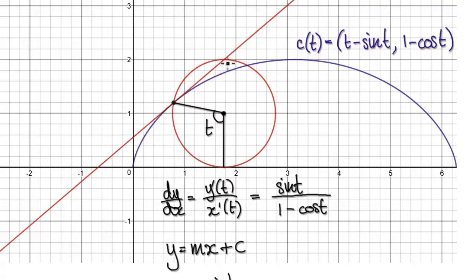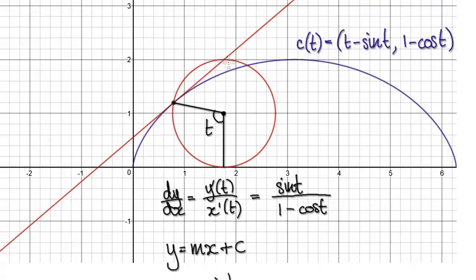And by the way, this point — the intersection of the circle and the tangent line — is always, always, for some reason, the tangent line of the cycloid where it intersects with the circle, it's always right above the center. This point here is always right above the center.